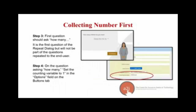Step three: once you have a counting variable, create your 'how many' question. This is the jumping-off point for your end user — you ask how many times they need to go through the loop. This is the first question in the repeat dialog, but it will not be part of the questions repeated to the end user. On this 'how many' question, go to the button section and set the counting variable to one as the repeat option. That number they give you is stored in a variable — in this example, 'number of children' — and you'll want to note that variable for later use.